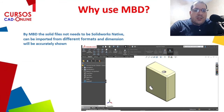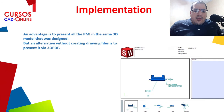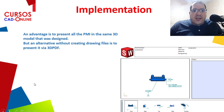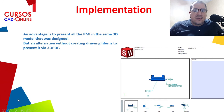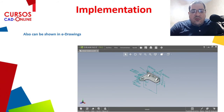With MBD, the solid files do not need to be native SolidWorks or any other software — they can be imported from different formats and still be accurately dimensioned. For implementation, one challenge may be the lack of enough licenses for 3D visualization, so there's an option to use PDF files, or another way is to view them in eDrawings as a presentation for the solid file.